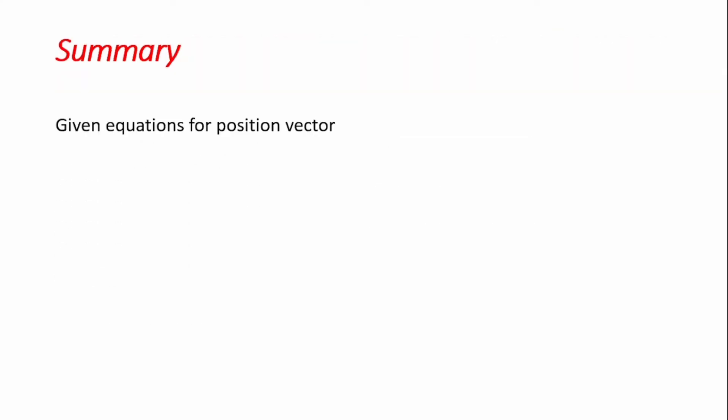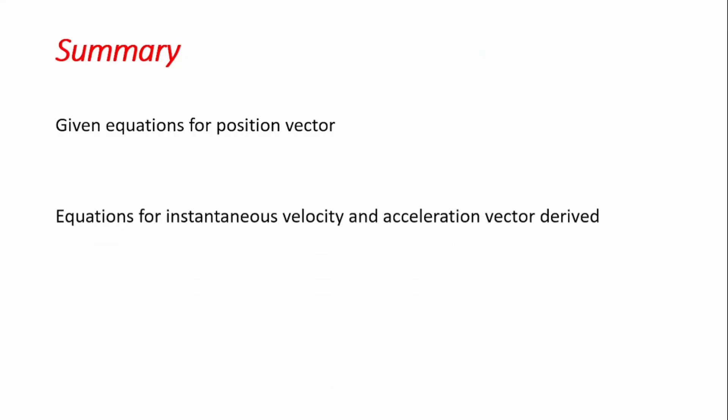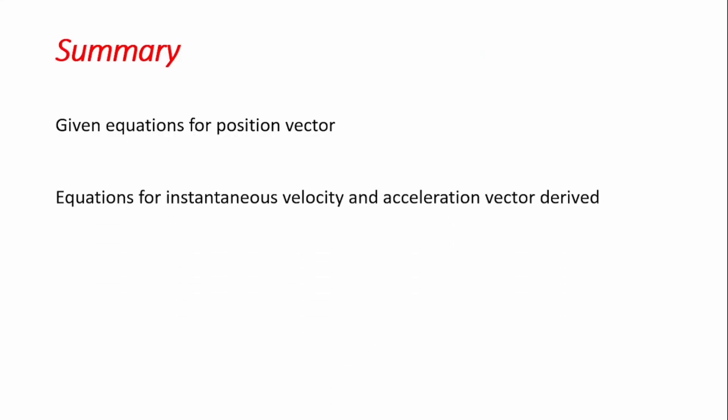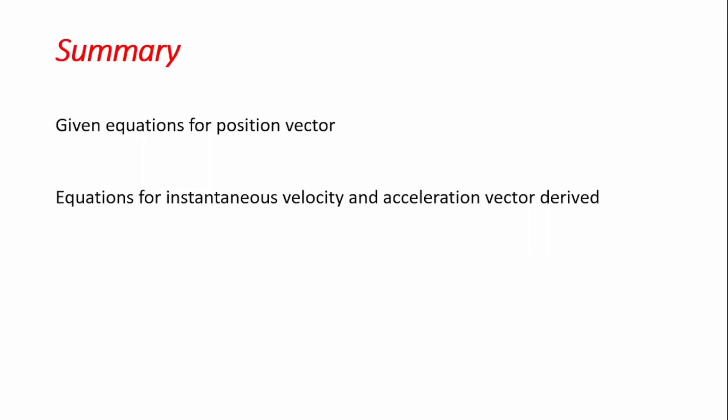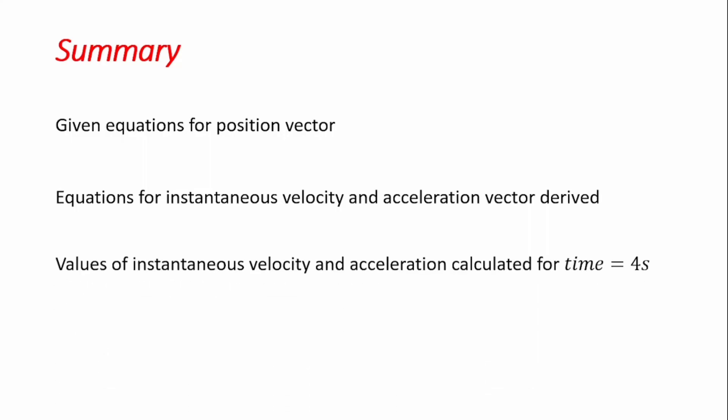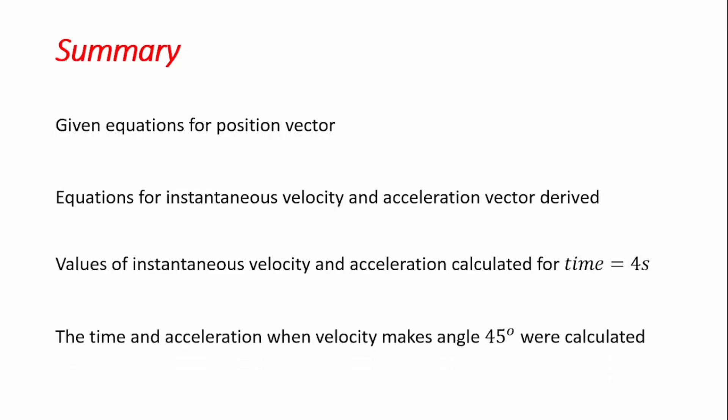In summary, we were given equations for the position vector, from which we derived equations for instantaneous velocity and acceleration. We then calculated values of position, velocity, and acceleration at t = 4 seconds, and found the times and accelerations when the velocity makes an angle of 45 degrees with the horizontal.